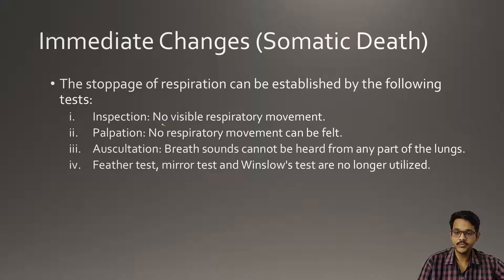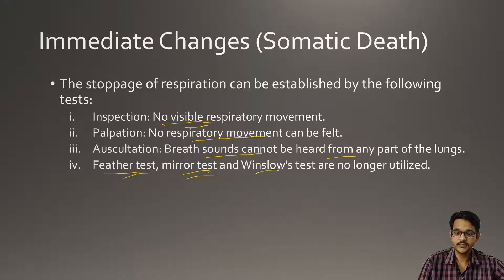Stoppage of respiration can be established by the following tests. First, by inspection: no visible respiratory movements — chest movements are absent. Palpation: respiratory movements cannot be felt on the chest region. Auscultation using a stethoscope: breath sounds cannot be heard from any part of the lungs. Older tests like the feather test, mirror test, and Windsor test are no longer utilized.